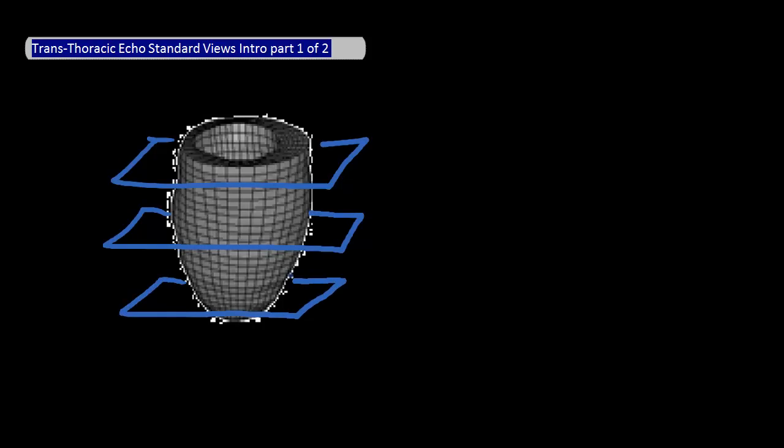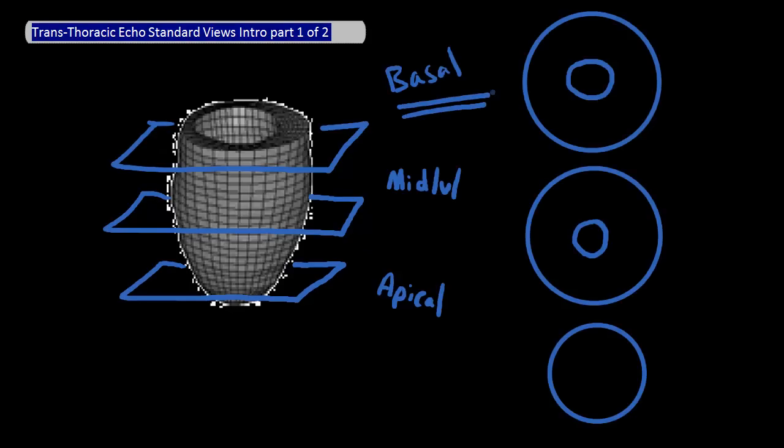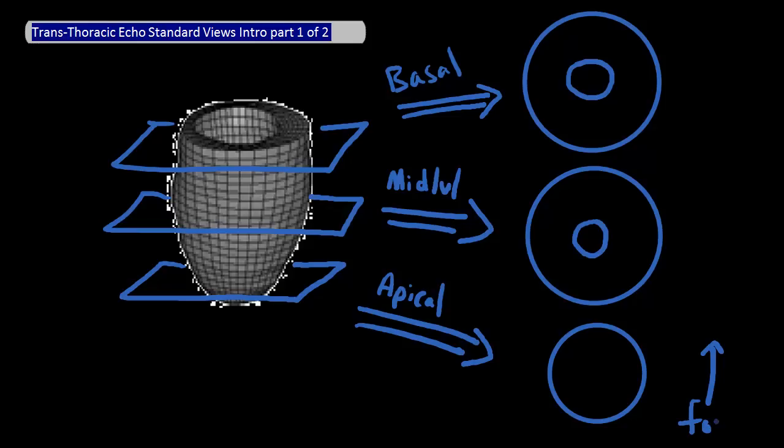And we can then lay out these cuts like this, in which the basal cut is here, the mid-level cut is here, and the apical cut is here. To orient you, assume that we're looking at these cuts from the patient's foot, much like with a CT scan. In that case, the anterior wall of the left ventricle is here for all three cases.